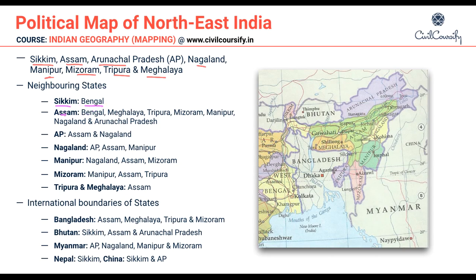For Assam, the neighboring states are West Bengal, Meghalaya, Tripura, Mizoram, Manipur, Nagaland, and Arunachal Pradesh. So Assam, along with West Bengal, has all the other northeastern states as its neighboring states.